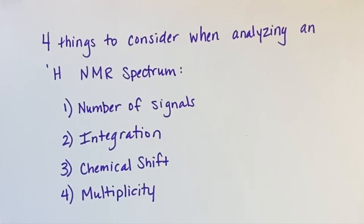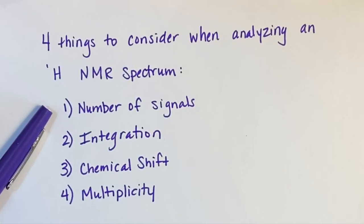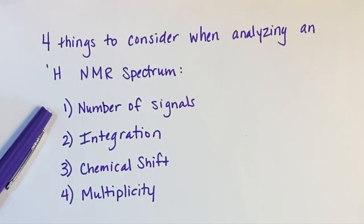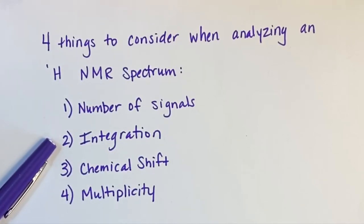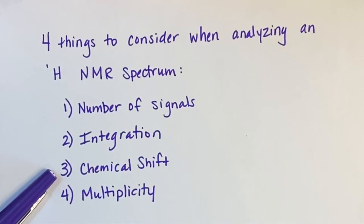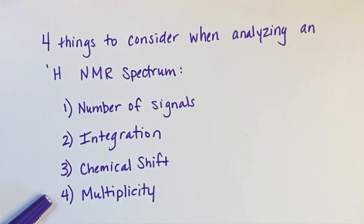As we begin analyzing an NMR spectrum, there are 4 things to consider in a proton NMR spectrum. Number 1: the number of signals, which represents the number of unique hydrogens. Number 2: the integration, which represents the number of hydrogens accounted for in each signal. Number 3: the chemical shift — where between 0 and 12 ppm the peak falls. Number 4: the multiplicity — how many lines are in the signal, which tells us about protons on the neighboring carbon.